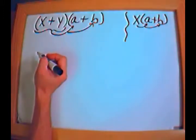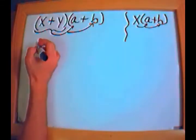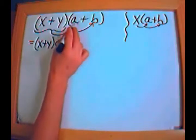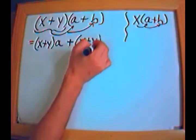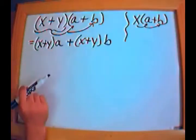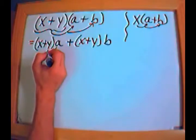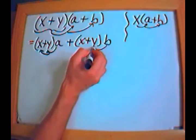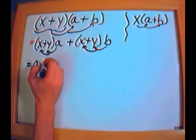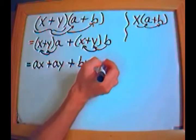So let's do that — it's perfectly legal. I pretend that x plus y is the thing out in front and distribute it in just like anything else. That gives me x plus y times a, plus x plus y times b. Now I can distribute the a in and distribute the b in, which gives me ax plus ay plus bx plus by.